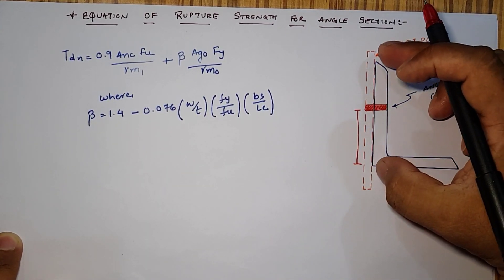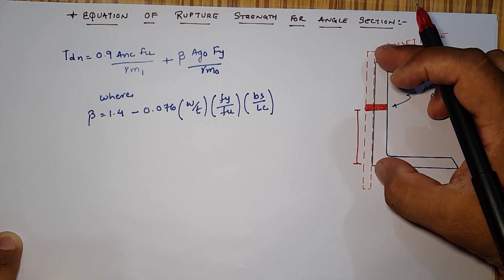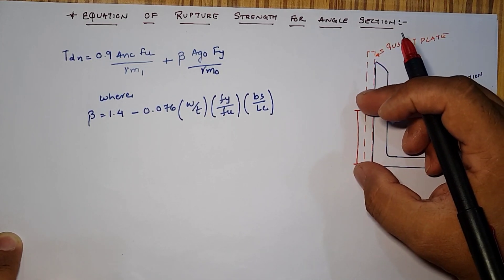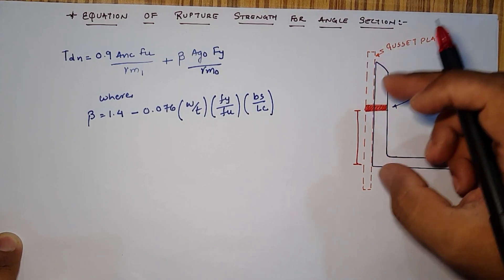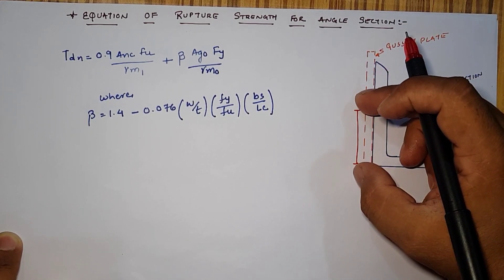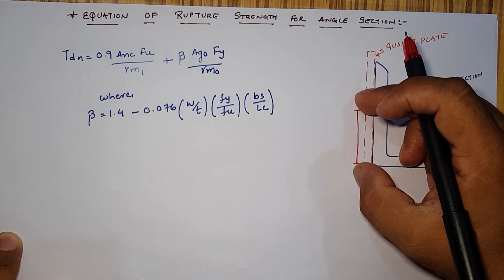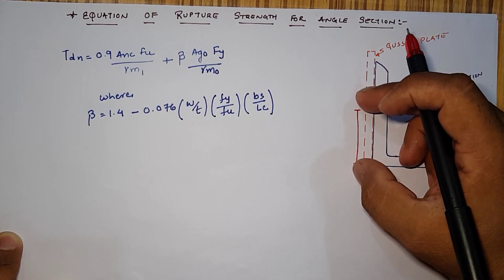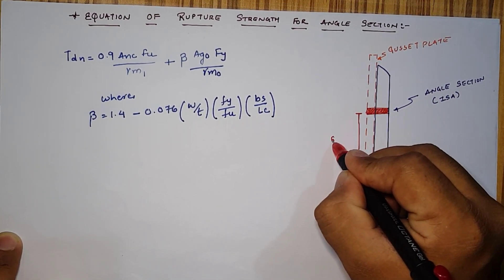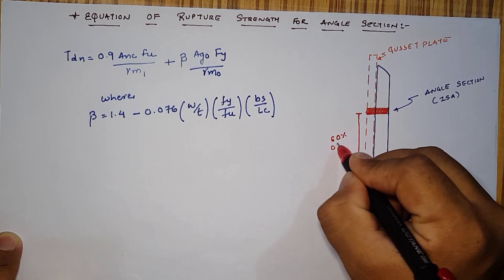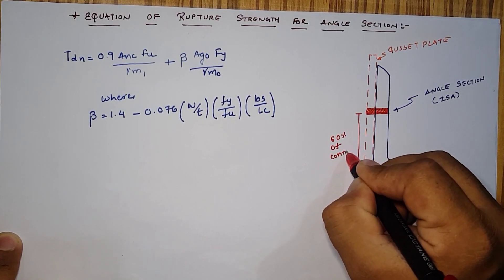This bolt or row bolting is provided at 60% of height from the bottom. It means that if height of the ISA section is 100 then the bolt is provided at 60 mm. If height is 75 then 75 into 0.6, which is 45 mm. This height must be at 60% of connected leg.